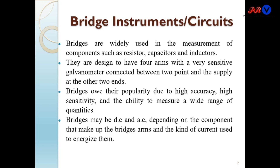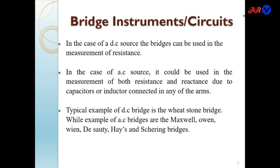DC bridges are used to measure only resistance, while AC bridges can measure resistance, inductance, as well as capacitance. In the case of an AC source, it could be used in the measurement of both resistance and reactance — inductive reactance or capacitive reactance — due to capacitors or inductors connected in the arms. A typical example of a DC bridge is the Wheatstone bridge, while examples of AC bridges are the Maxwell bridge, Owens bridge, Wien bridge, Desauty bridge, Hay bridge, and Schering bridge.